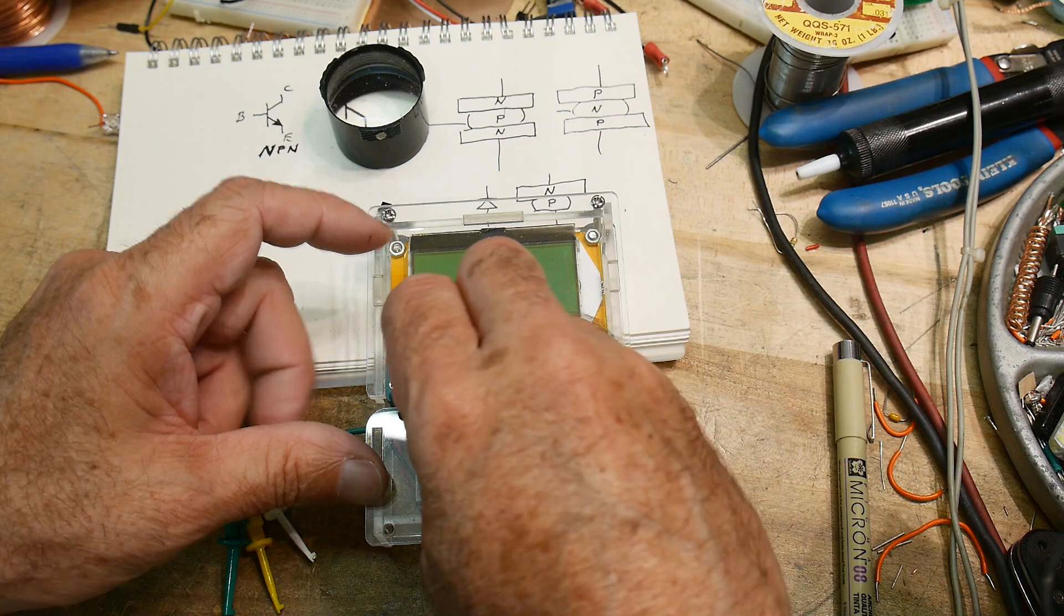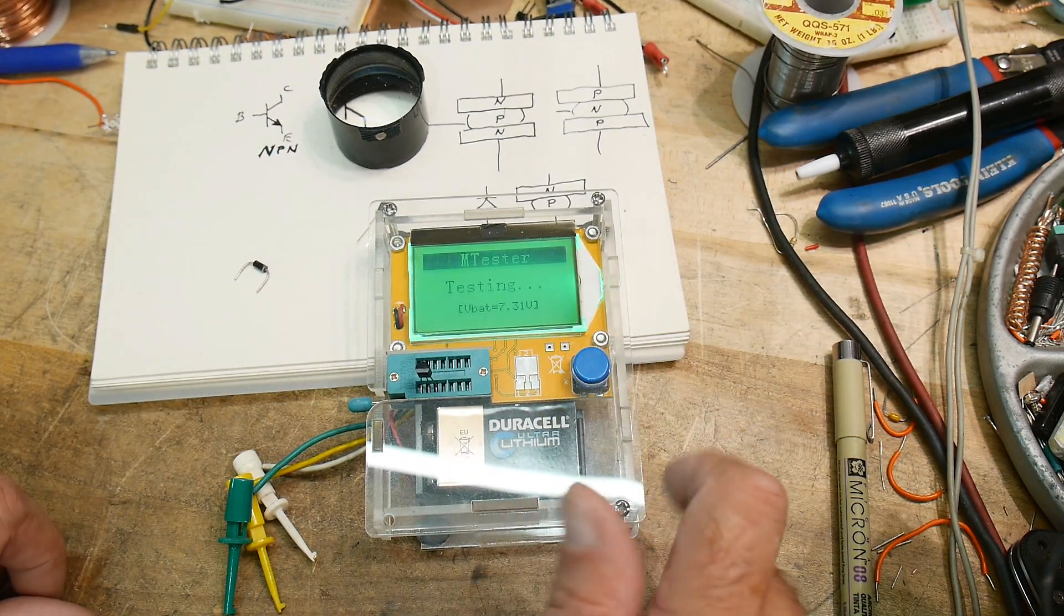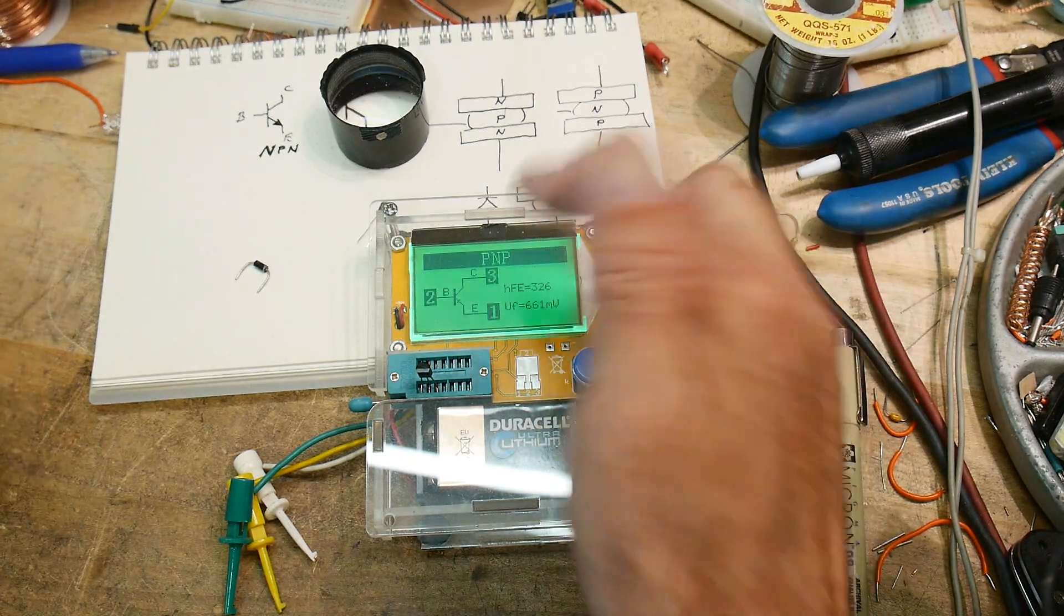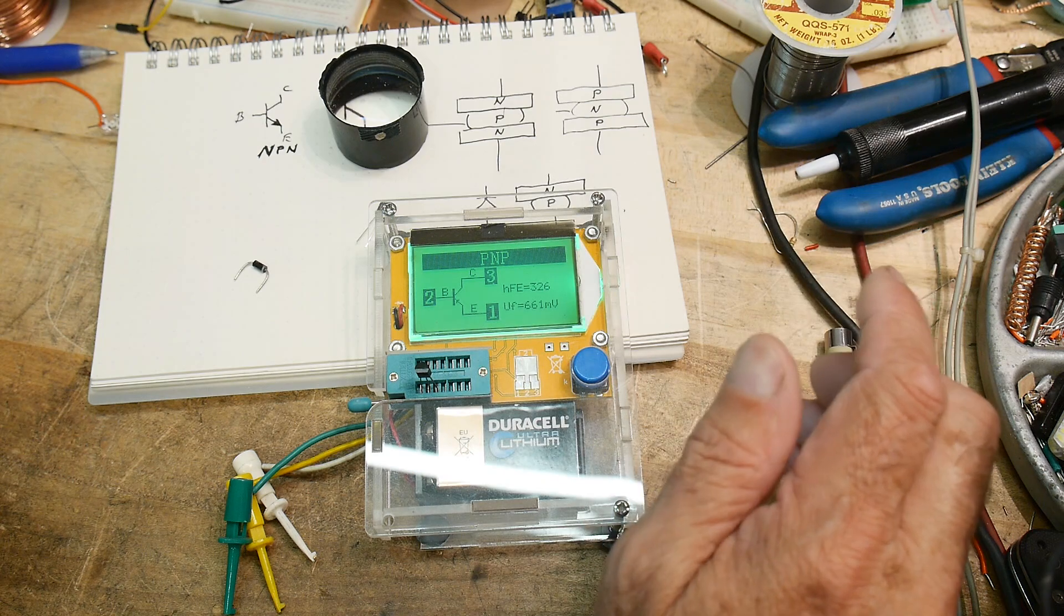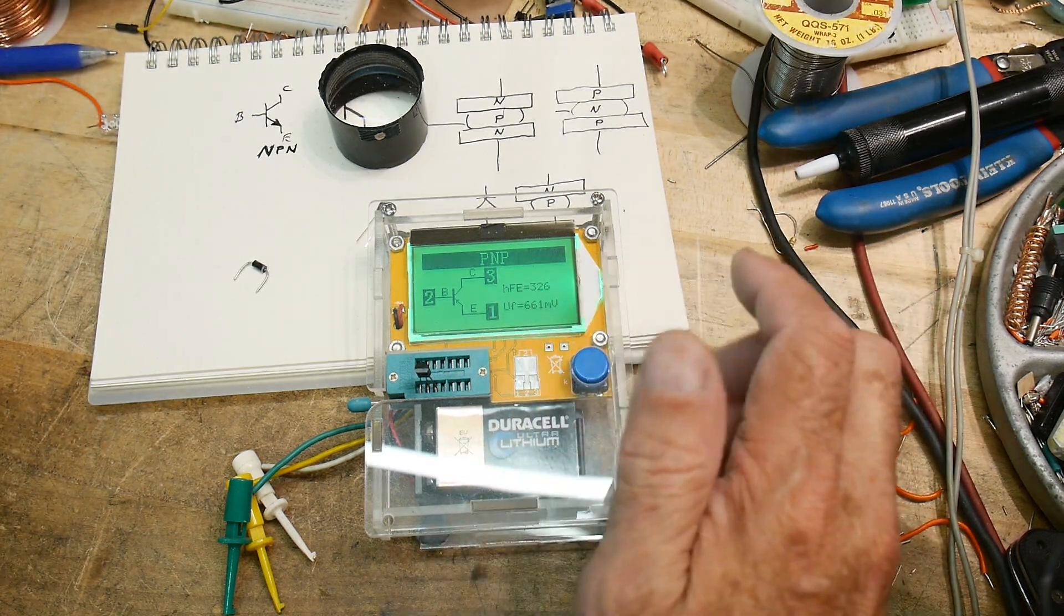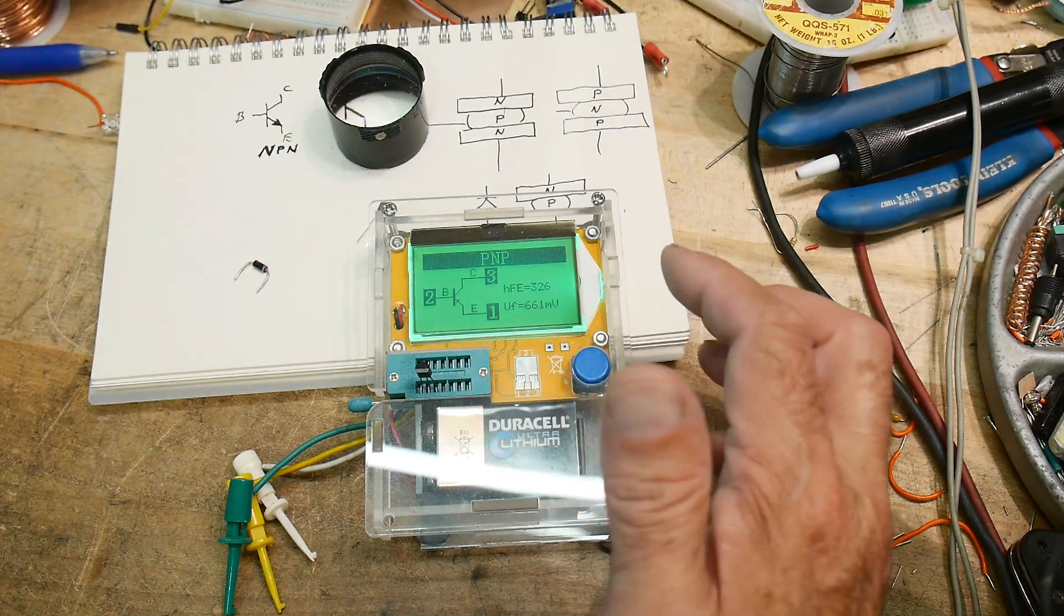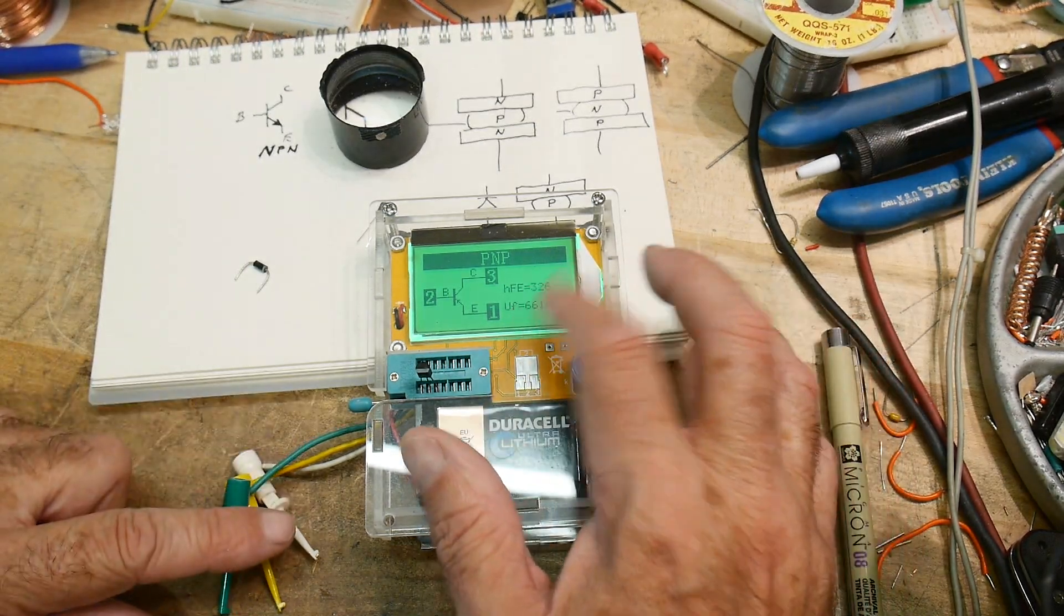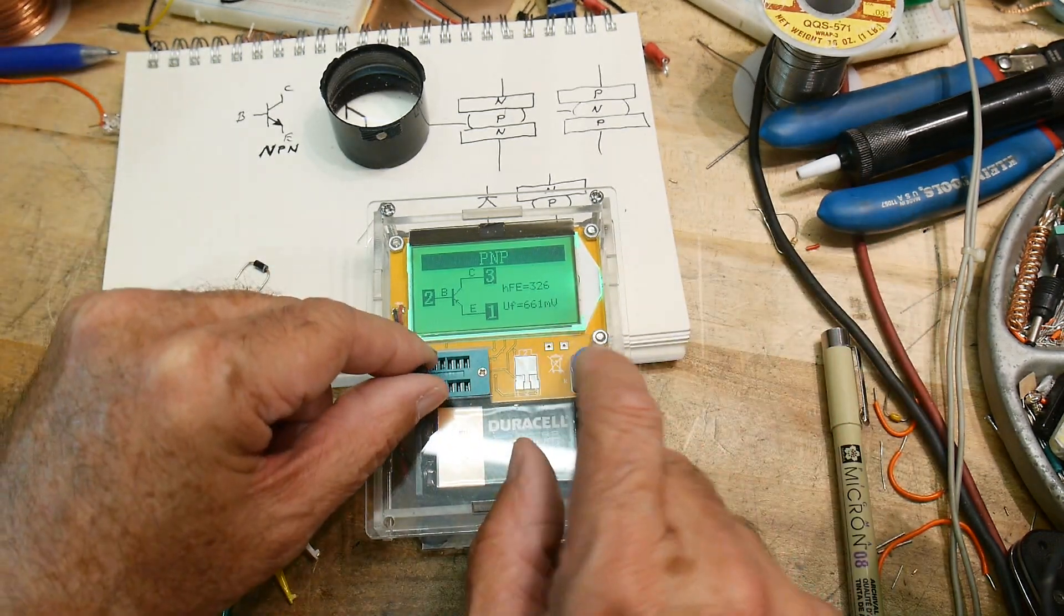So you take your little LED and you shove it into pins one, two, three. It doesn't matter what order you put it into. You just jam it in there. And then you push the go button. And it says, oh, you've got a PNP. And the pinout is one, two, three, emitter base collector. And yeah, there's the gain. The HFE is 326. And forward voltage is 0.66. Hey, we just measured that one. 0.66. So this is an easy way to do it. So that one tests as a PNP.